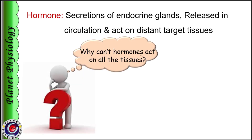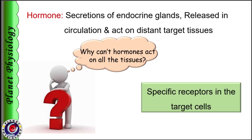For example, FSH and LH act only on gonads, or parathormone on bones, kidneys and GIT. Why can't they act on all tissues? This is because, being chemicals, hormones have specific receptors to bind, and the tissues that possess the receptors will respond to the hormones. So hormones always exert their actions through receptors.